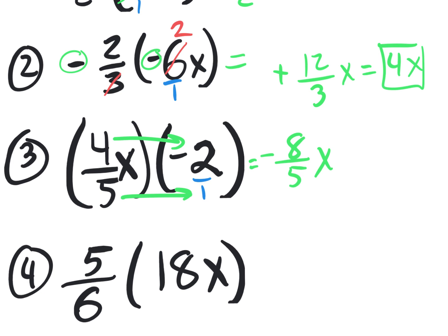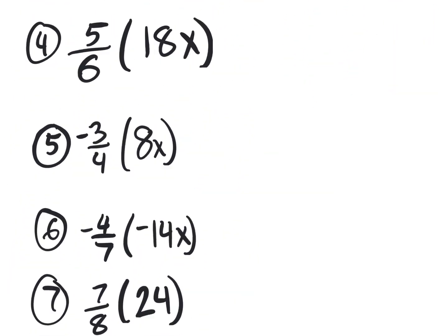Moving on to number four: five sixths times 18x. Put the 18 over one. You could multiply top with top, bottom with bottom, then reduce — but reducing first is a lot easier. I don't want to multiply five times 18; it's a lot easier to recognize that 18 on top divided by six on the bottom is three. So what we really have is five times three x, and five times three x is 15x.